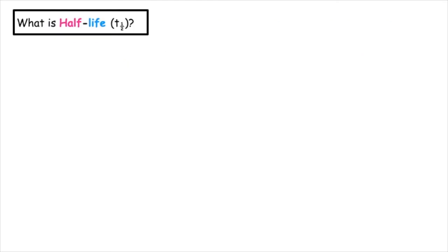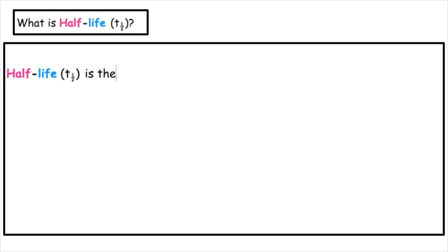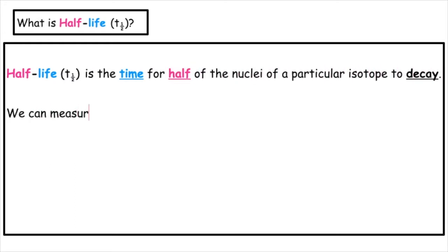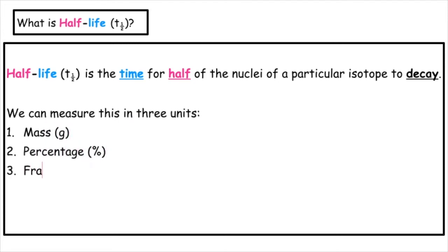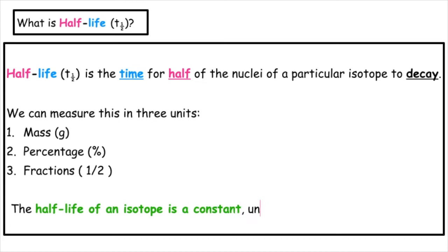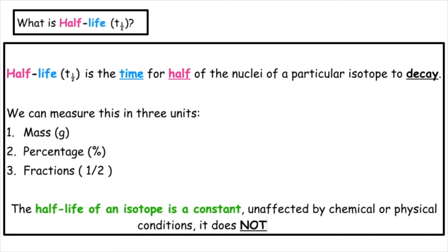What is half-life? Half-life is the time for half of the nuclei of a particular isotope to decay. We can measure this in three units: mass, which is measured in grams; percentage; and fractions. The half-life of an isotope is a constant — it is unaffected by any chemical or physical conditions. It does not change.